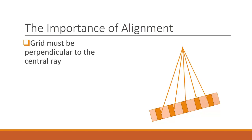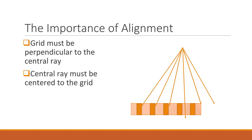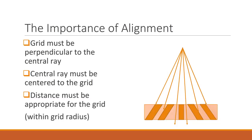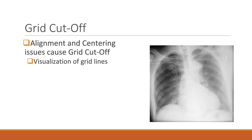Grids require a certain amount of precision to be used effectively. When alignment is incorrect, grid cutoff is the result. The first rule in using a grid is that the central ray and grid must be perpendicular. Additionally, the central ray must be directed to the center of the grid. The divergent x-ray beams interacting with the lead strips will be absorbed otherwise. The source-to-image distance, or SID, must be appropriate for the grid — meaning the SID needs to be within the designated grid radius. All of these alignment issues cause grid cutoff, where the necessary remnant beam is being absorbed by the lead strips and information is missing as a result.